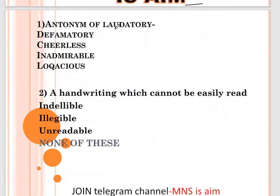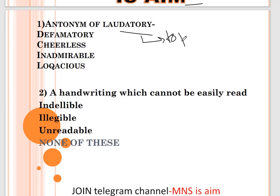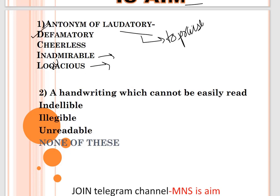Question number one: antonym of 'laudatory'. Laudatory means to praise or appreciate someone. Options are defamatory, cheerless, inadmirable, and loquacious. Loquacious means talkative. Cheerless means dull. Inadmirable means one you don't want to admire. Defamatory is the correct option — defamatory means to condemn or speak ill of someone.